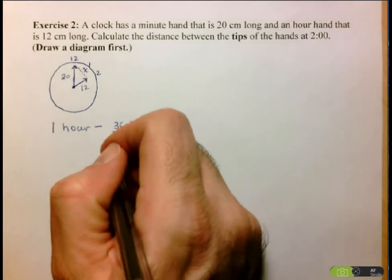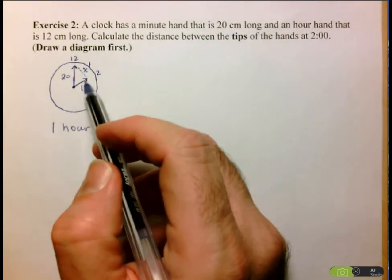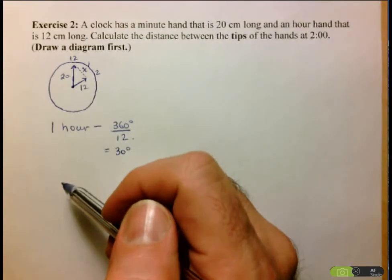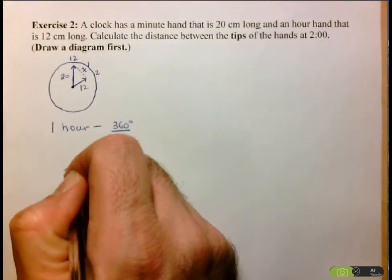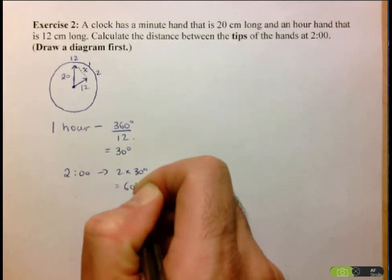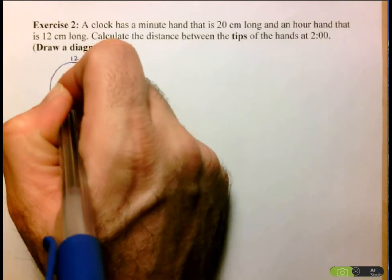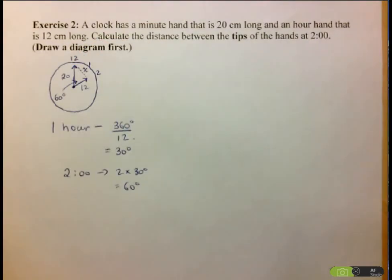So one hour corresponds to 30 degrees. But since we're going to two o'clock, that's going to be two times 30. So two o'clock, we've got two times 30 degrees, so 60 degrees. So now I have this angle inside the triangle. And I now have enough information to solve this problem.